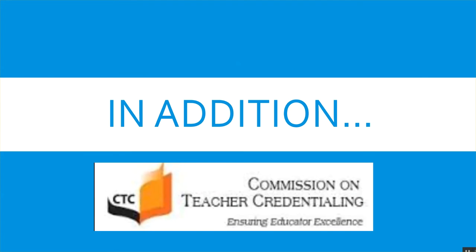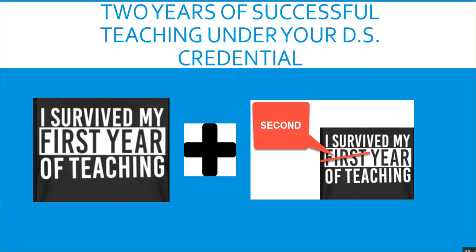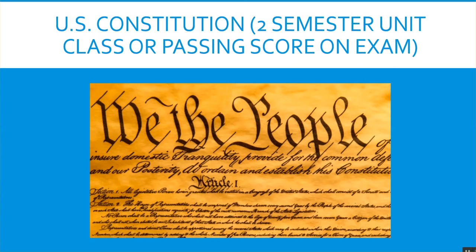In addition, you may have other requirements identified by the Commission on Teacher Credentialing. You'll need two years of successful teaching experience under your preliminary Designated Subjects Credential. To meet the U.S. Constitution requirement, you either can take a two-semester unit class or pass an exam through an approved college, university, or program.